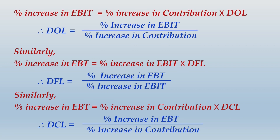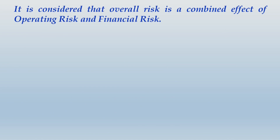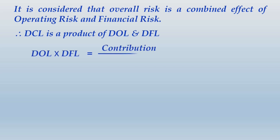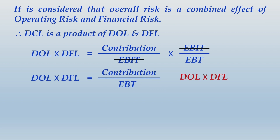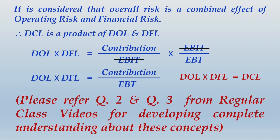For detailed understanding, please watch the concept video on leverages. DCL is a product of DOL and DFL. Mathematically, DOL is contribution divided by EBIT, and DFL is EBIT divided by EBT. When you multiply them, EBIT cancels out, giving contribution divided by EBT, which is DCL — confirming that DOL multiplied by DFL equals DCL. Please refer to question numbers 2 and 3 from regular class videos for complete understanding.